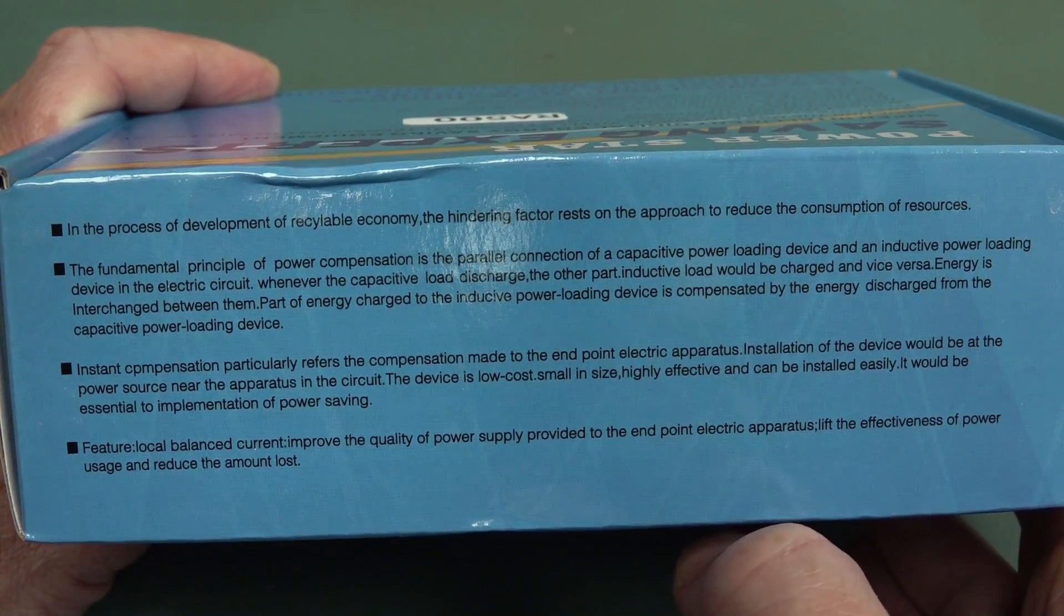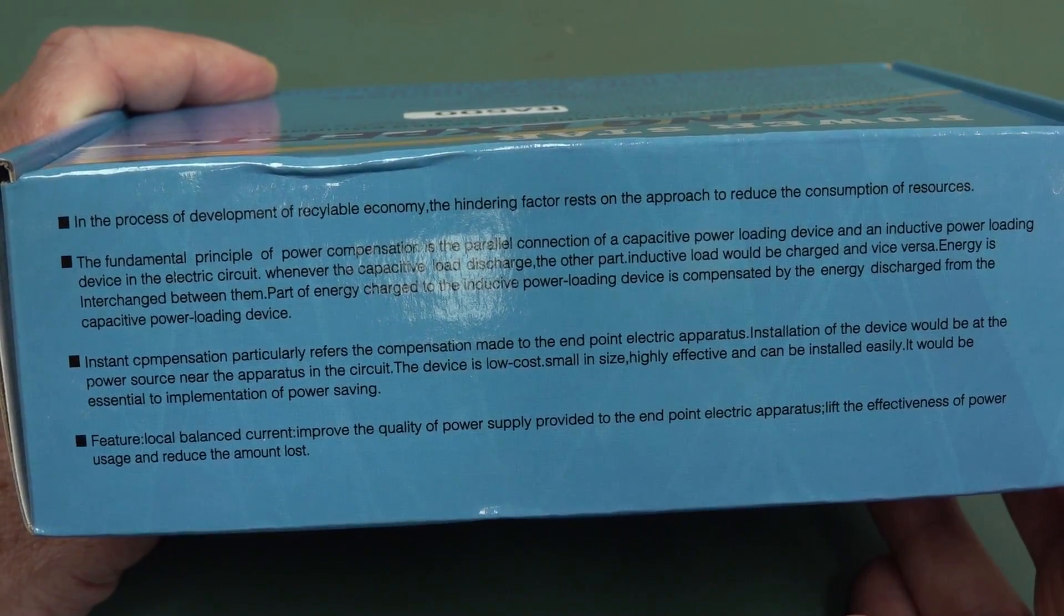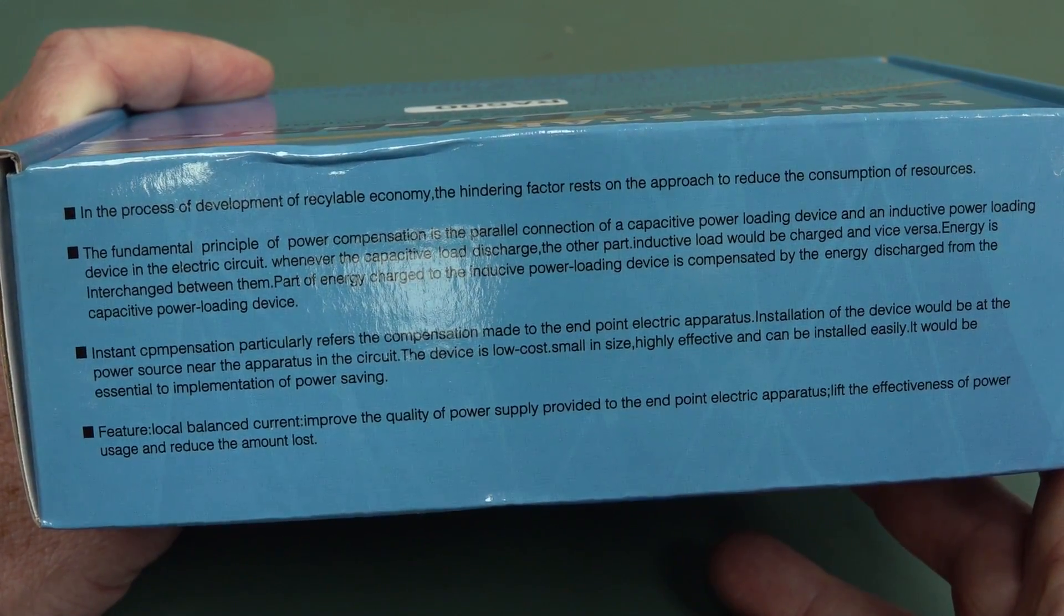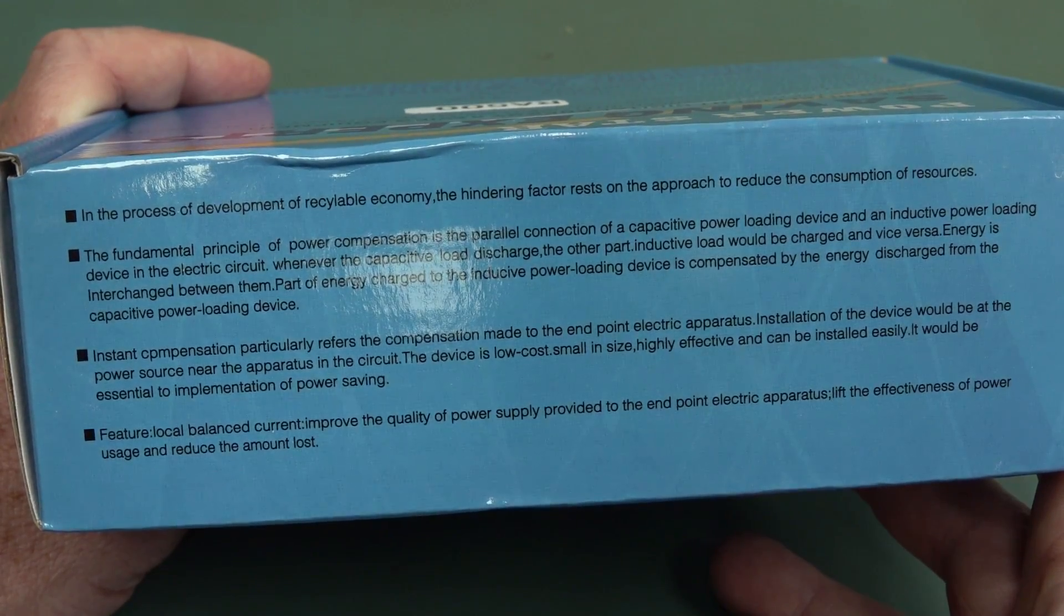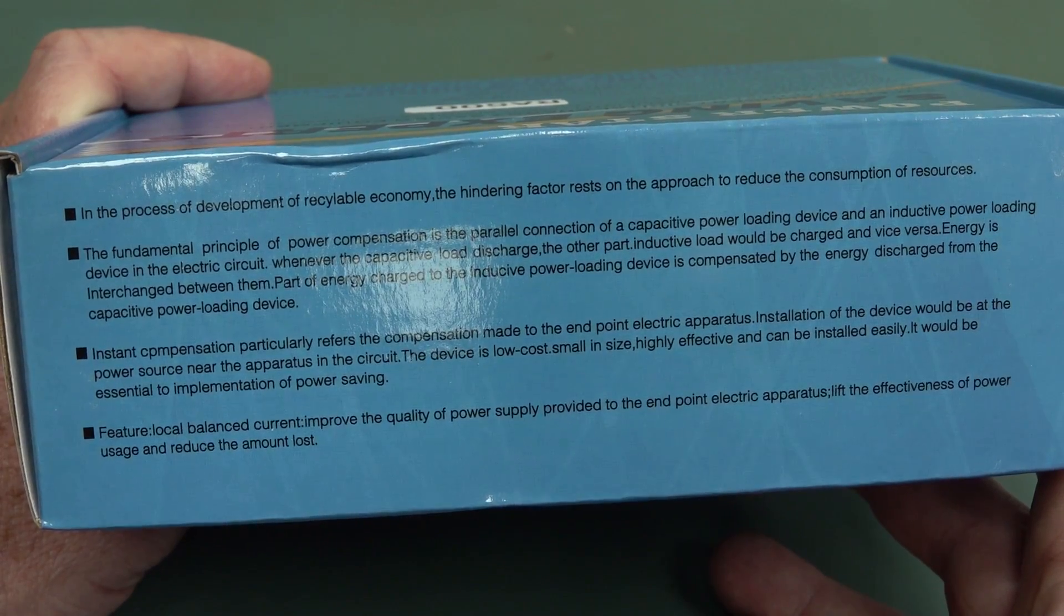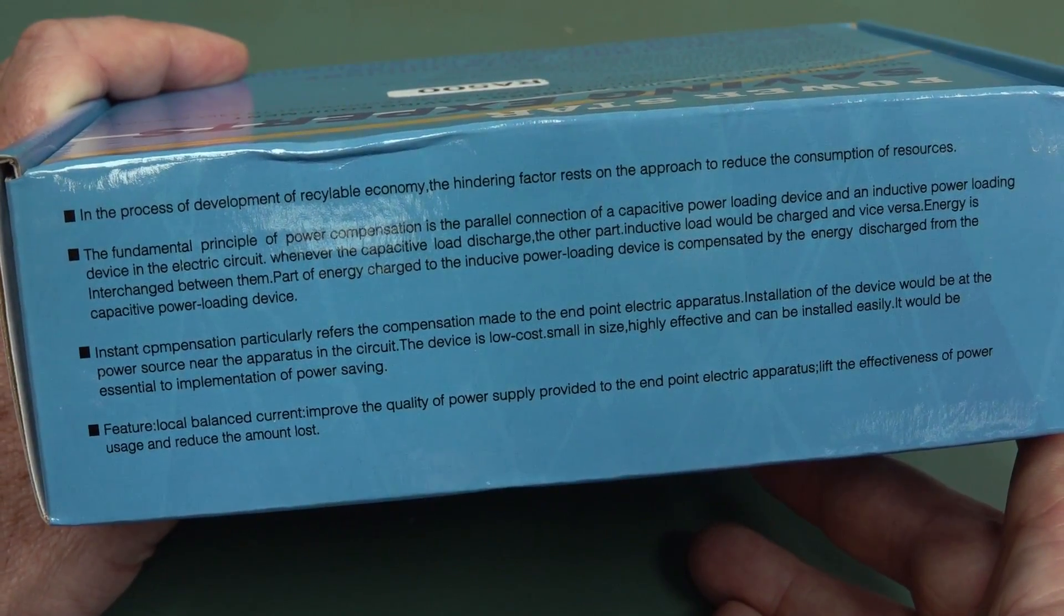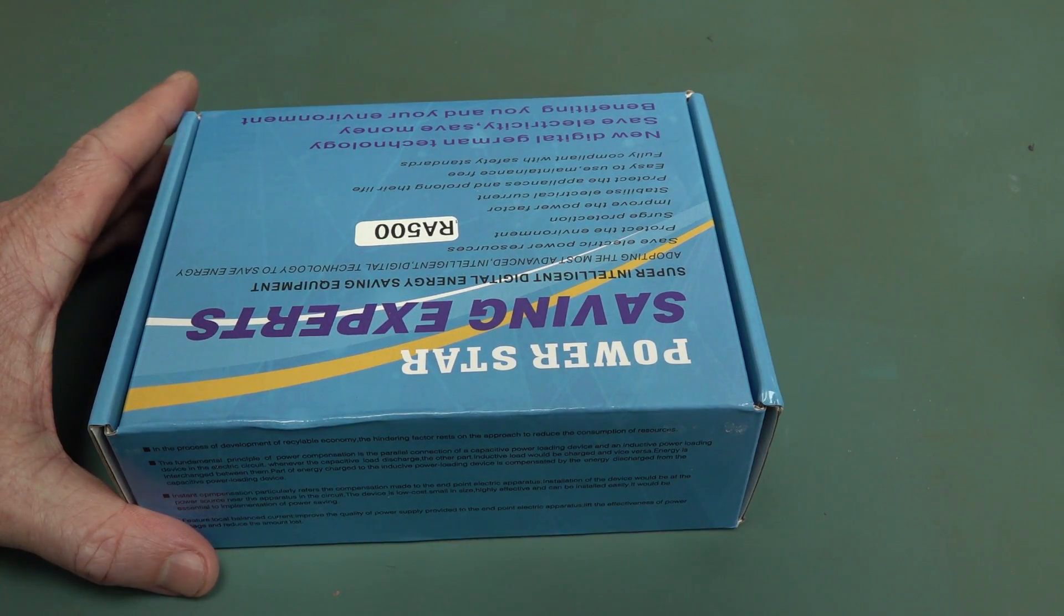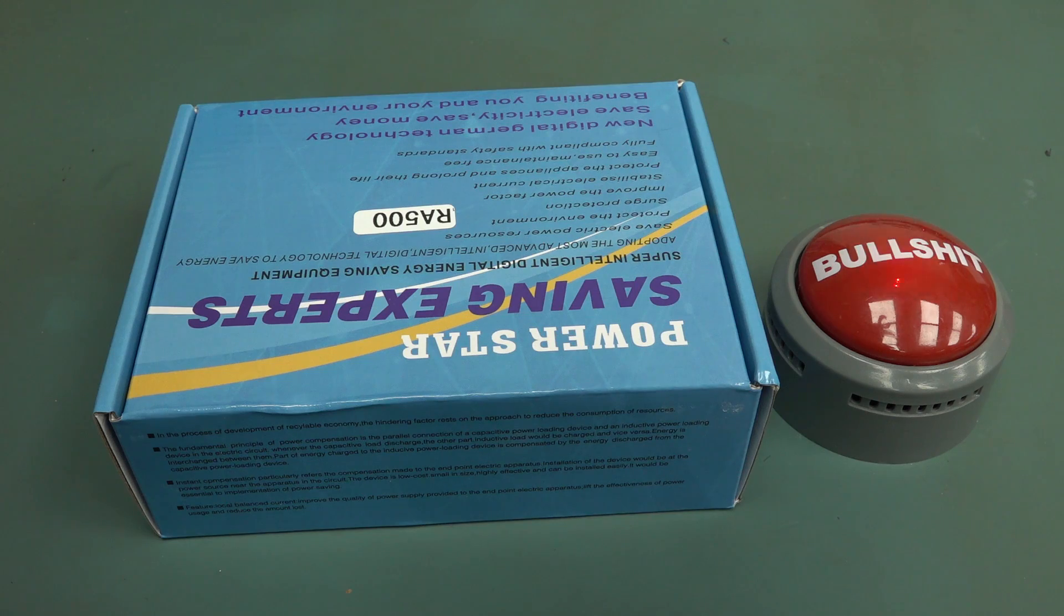They say it right on the box. It's a power factor correction capacitor. And I've done the previous video on why that is just not gonna do much, if anything, for you. Including inductive power loading device in the electric circuit. Whenever the capacitive load discharged, the other part, inductive load, would be charged and vice versa. Energy is interchanged between them. Installation of the device would be at the power source near the apparatus in the circuit. It would be essential to implementation of power saving. Improve the quality of power supply provided to the endpoint electric apparatus. Yeah, cause they think a capacitor does that.